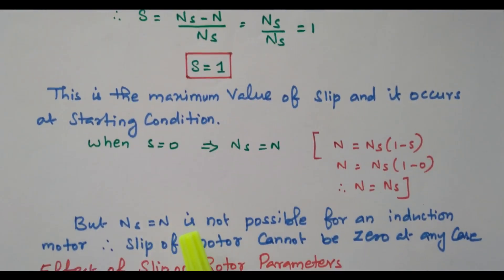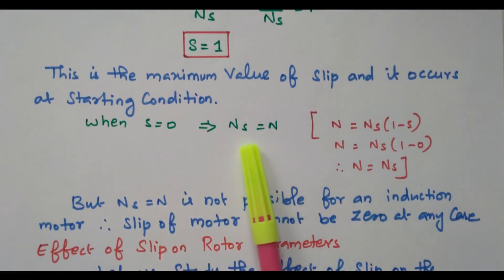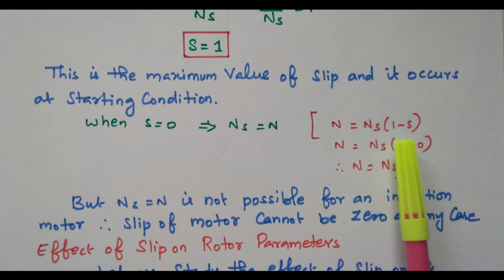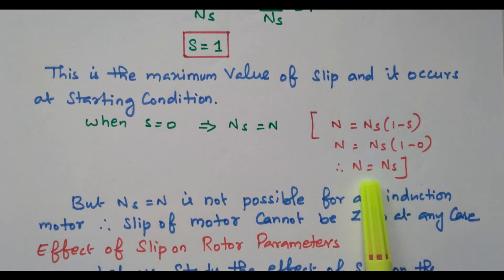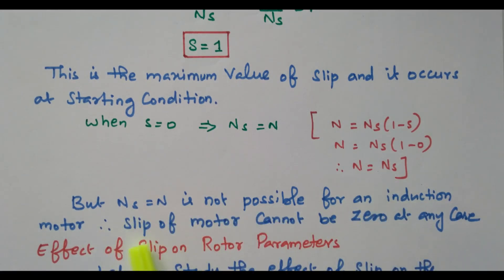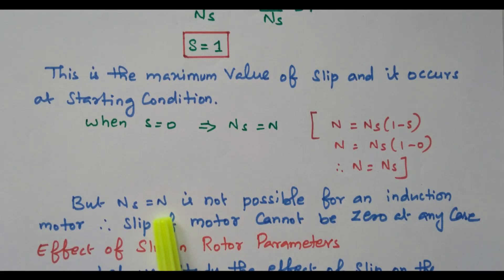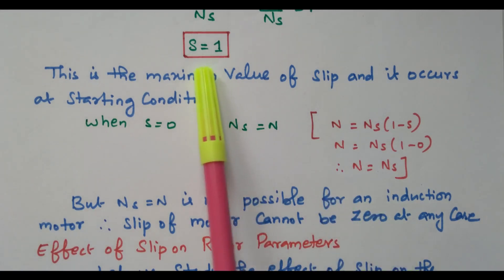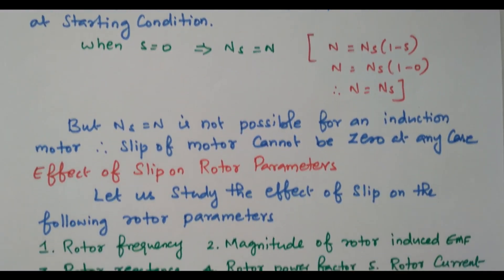When s = 0, from n = Ns(1 minus s), we get n = Ns, meaning synchronous speed and rotor speed are equal. But Ns = N is not possible for an induction motor — if both speeds were equal the rotor would be locked and would not rotate. So slip cannot be 0 at any case. The slip is always greater than 0, with a maximum value of 1.